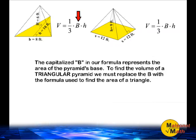To find the volume of a triangular pyramid, we must replace the B with the formula used to find the area of a triangle. To find the area of a triangle, we must multiply one-half by the length of the triangle's base by the length of the triangle's height.